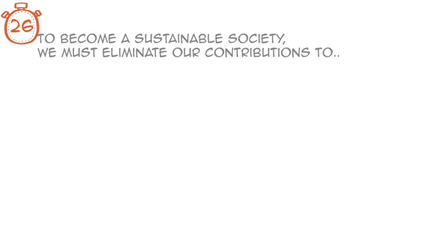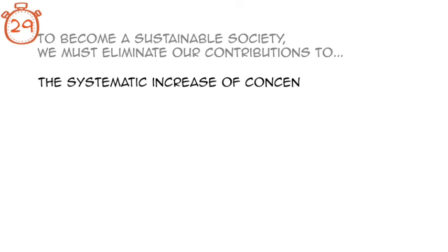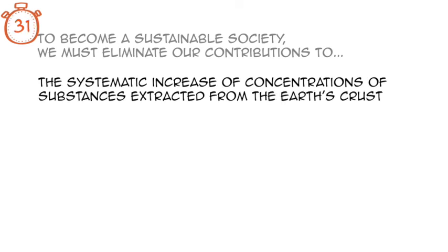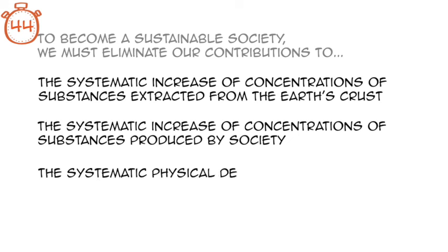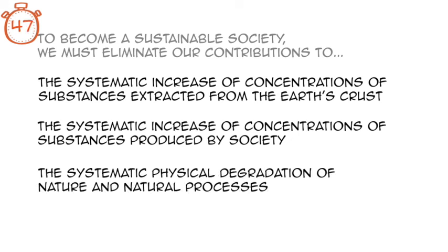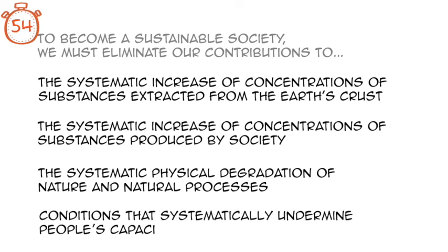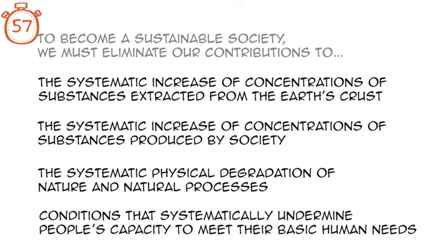In other words, to become a sustainable society, we must eliminate our contributions to: the systematic increase of concentrations of substances extracted from the earth's crust, for example heavy metals and fossil fuels; the systematic increase of concentrations of substances produced by society, for example plastics, PCBs, and DDT; the systematic physical degradation of nature and natural processes, for example over-harvesting forests, destroying habitat, and overfishing; and conditions that systematically undermine people's capacity to meet their basic human needs, for example unsafe working conditions and not enough pay to live on.